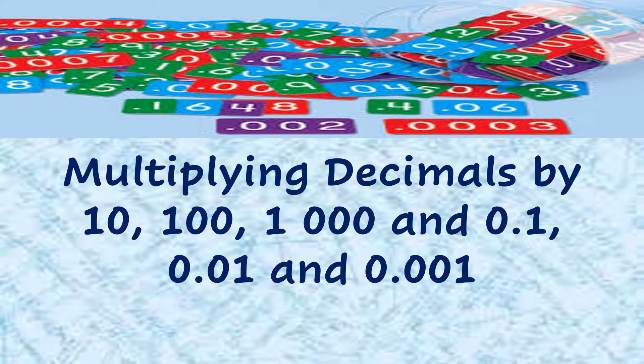Multiplying decimals by 10, 100, 1000, and one-tenth, one-hundredth, and one-thousandth.